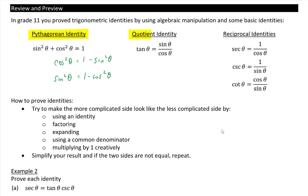Next we have the quotient identity, which is tanθ equals sinθ over cosθ. And finally your reciprocal identities, which are secant, cosecant, and cotangent of θ. Note for cotangent we can have it as cosθ over sinθ, but it's also equal to 1 over tanθ.